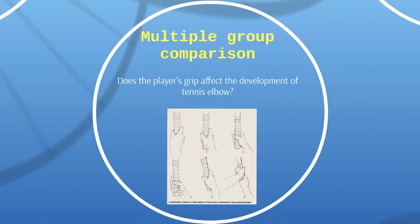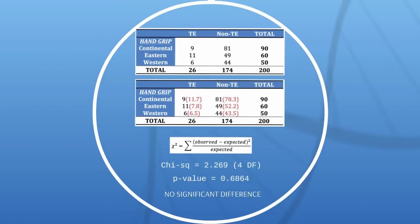Let's see now how we would make a comparison across a group that has multiple levels. Does the player's grip affect the development of tennis elbow? Here's a plot of the various grips you can have on the racket. Let's take a look at this particular sample, the Australian sample again, but instead of looking at males and females, we're ignoring gender and just looking at what hand grip they use to hold the racket. Much like the chi-squared test in the comparison between two groups, we're going to use the exact same method but between three groups.